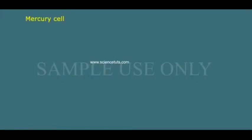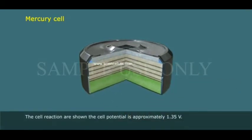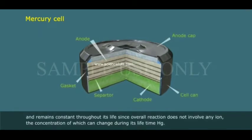Mercury cell. The cell reaction is shown. The cell potential is approximately 1.35 volts and remains constant throughout its life.